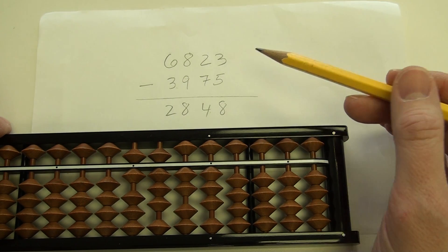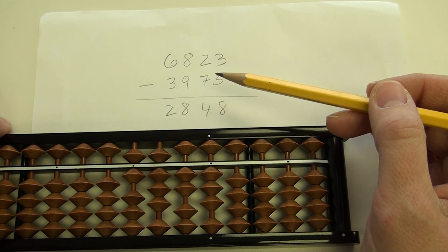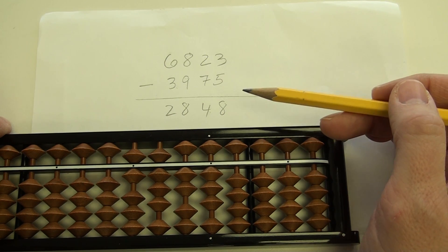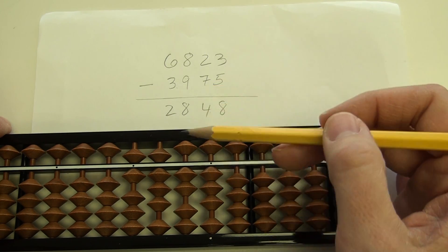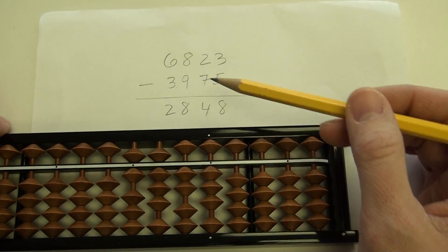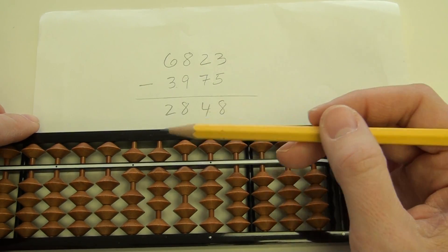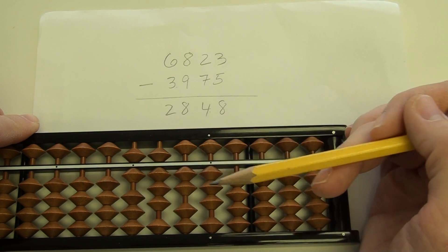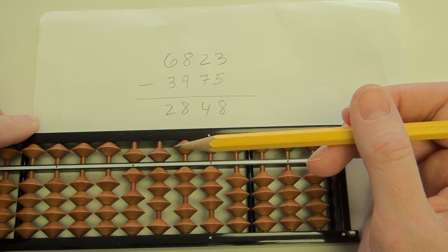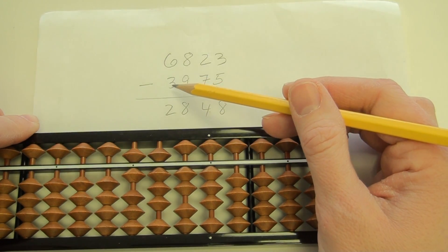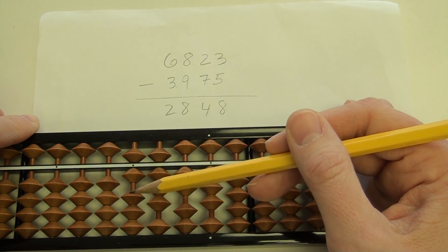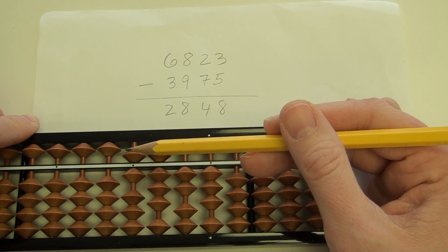Now I'm going to perform the subtraction. And just like addition with a soroban, subtraction is also performed left to right. So we're going to start with taking away 3,000. So from 6,000, I'm going to take away 3,000. Now 3,000 would be 3 earth beads, but I don't have 3 earth beads. I have a 5 and a 1.